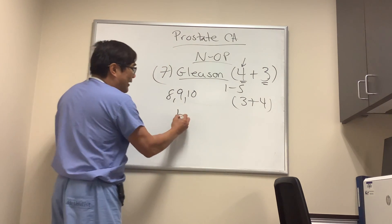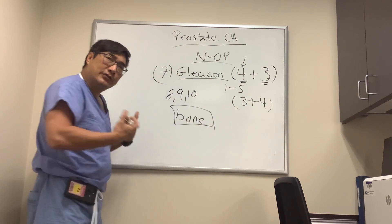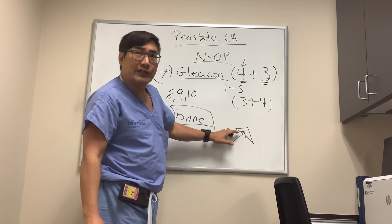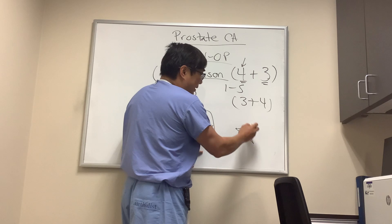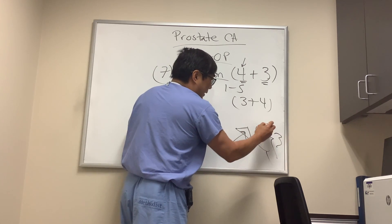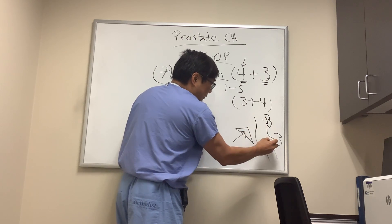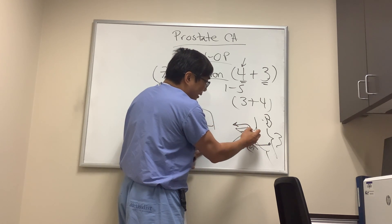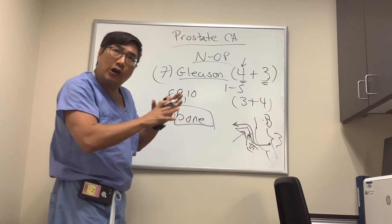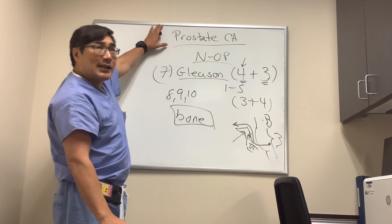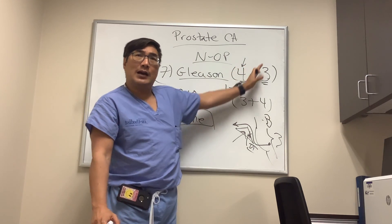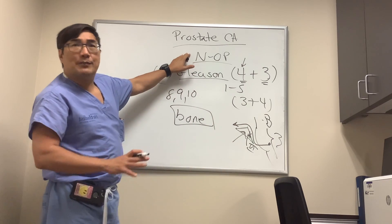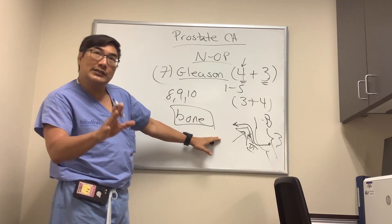Prostate cancer likes to go to bone, and in neuro-op it commonly metastasizes to the clivus — in fact, prostate is very high on the list of metastatic lesions to the clivus. The clivus means 'slope,' and the sixth nerve rides up the clivus, turns at Dorello's canal, and enters the cavernous sinus to reach the orbit. So a unilateral or bilateral sixth nerve palsy can be the presenting or only finding of a clivus metastasis.